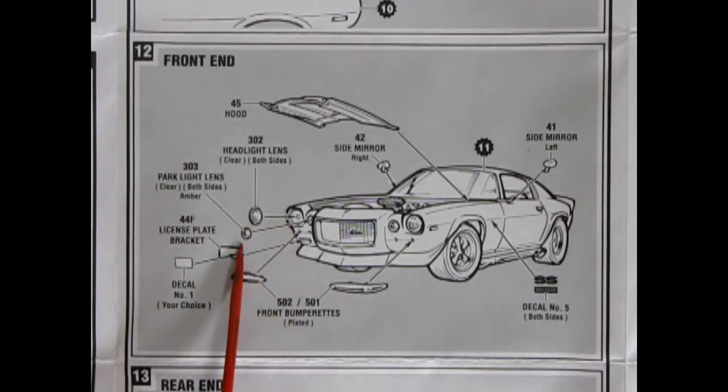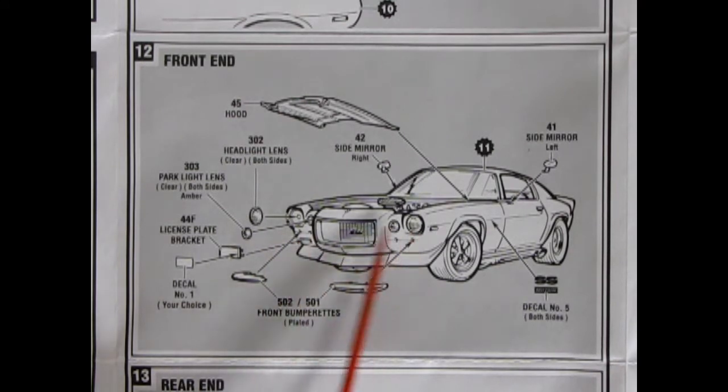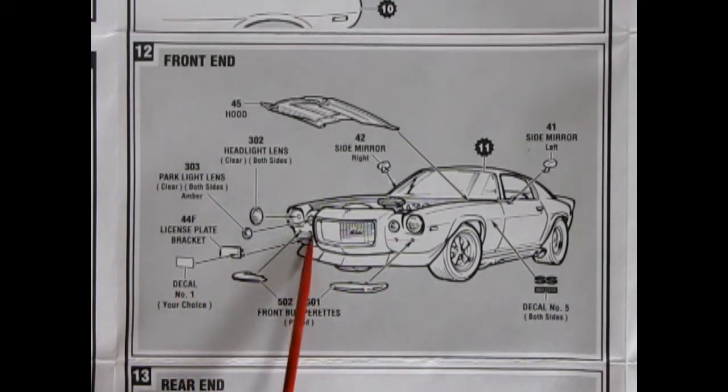So, here we've got our headlight lenses popping in, as well as our parking light lenses going beside them. And then our license plate bracket will pop in underneath these headlights.